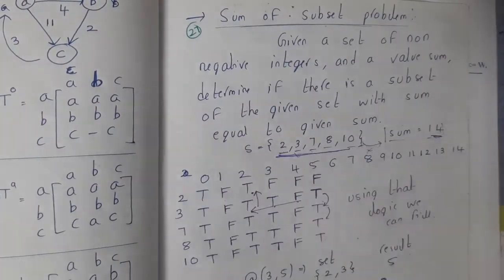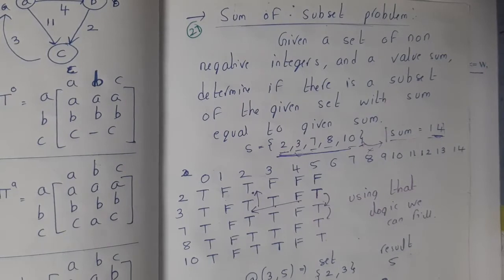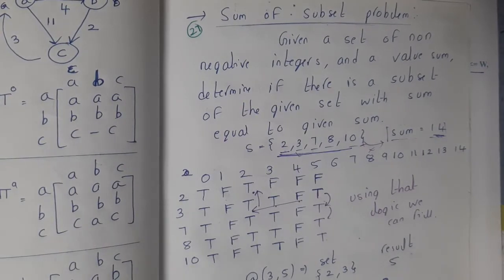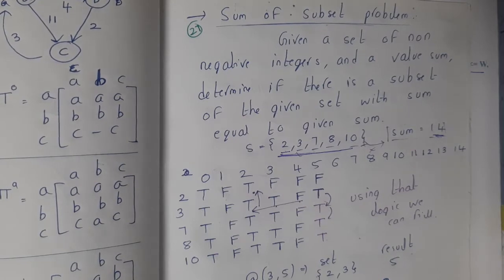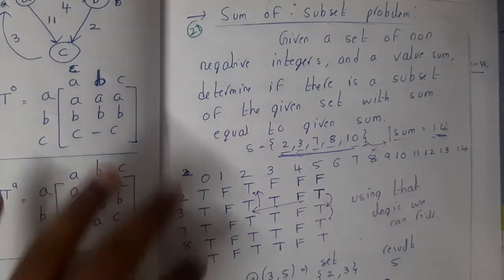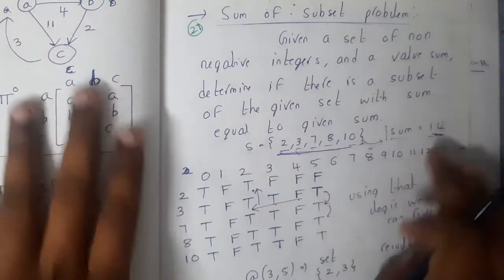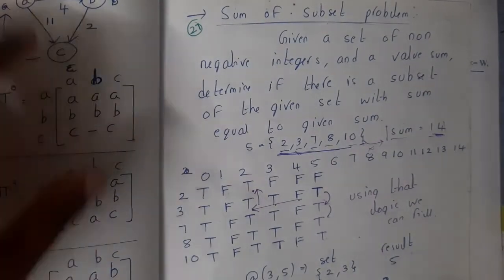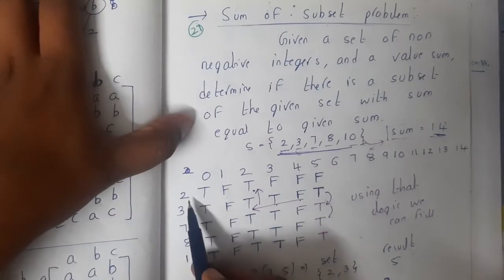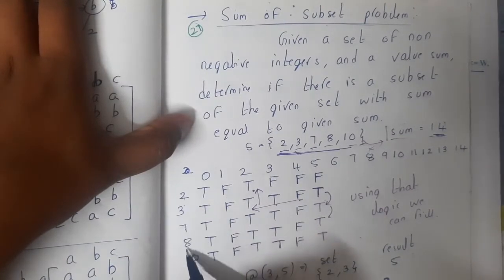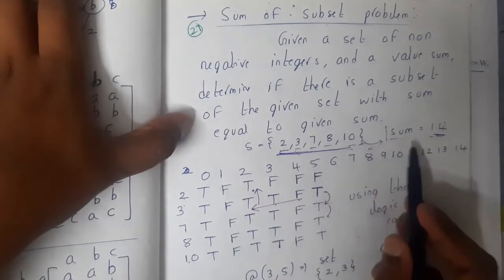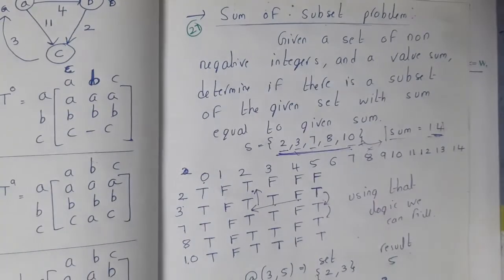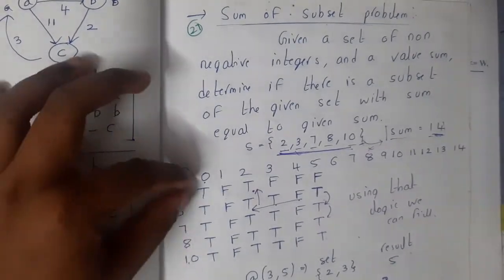A simple trick to solve this is by using dynamic programming. The computer cannot say directly that it's not possible. That's the reason it will be creating a table and checking all the combinations. Initially you start with {2, 3, 7, 8, 10}, and our sum is 14. You start from 0 to 14.